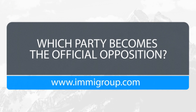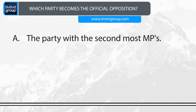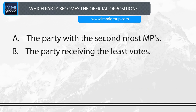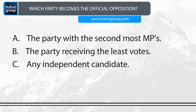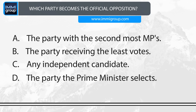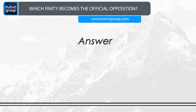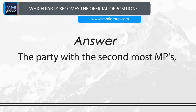Which party becomes the official opposition? A. The party with the second most MPs. B. The party receiving the least votes. C. Any independent candidate. D. The party the Prime Minister selects. Answer: The party with the second most MPs.